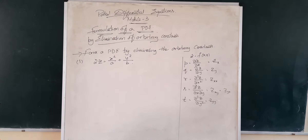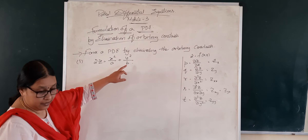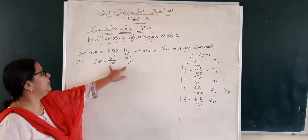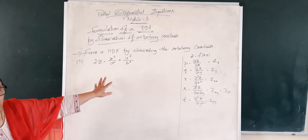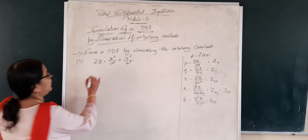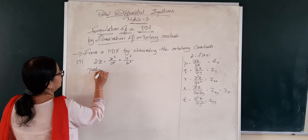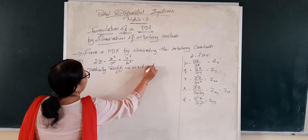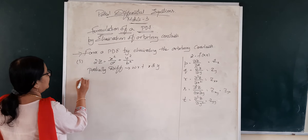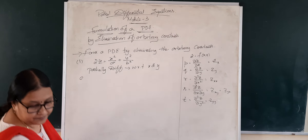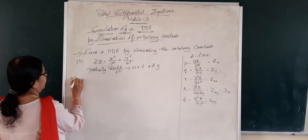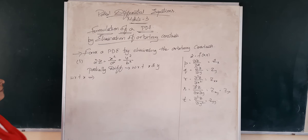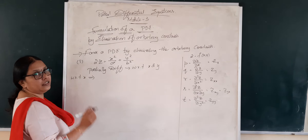Let us see how we solve this particular problem. We have a and b as two arbitrary constants that we need to eliminate, by applying partial differentiation on both sides. So let us partially differentiate with respect to x. Since z is a function of x and y, whenever we differentiate with respect to x, we treat y as constant — that is the logic of partial differentiation. If you are differentiating with respect to x, you need to treat the second variable y as constant.